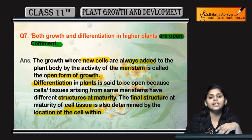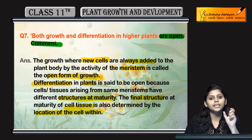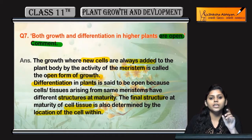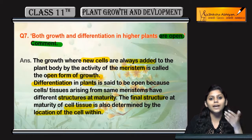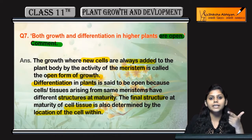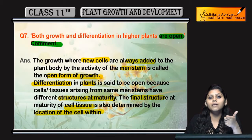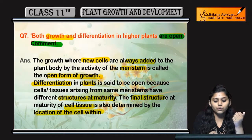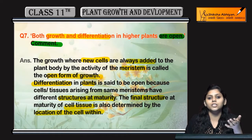Growth mein kya hota hai — meristematic region continuously divide karta hai, new cells form hote hain — yeh open form of growth hai jahan pe cells bard rahe hain. Whereas differentiation mein, har cell jo divide hua hai woh ek particular structure aur function gain karega, attain karega — yeh hua maturity attain karna. So this was that growth aur differentiation higher plants mein open form mein hota hai.